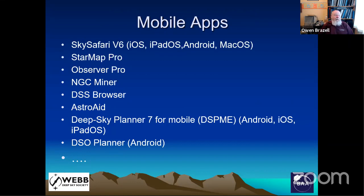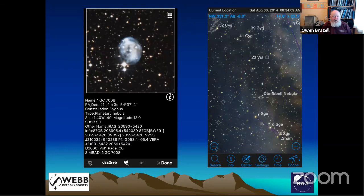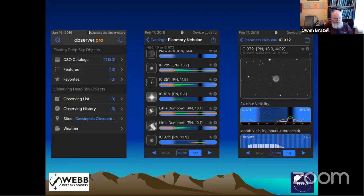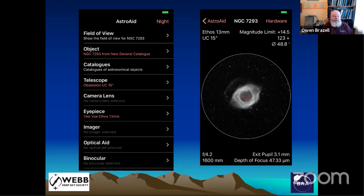More people are going to mobile apps now. Sky Safari is very popular, along with Star Map Pro, Observer Pro, and others. Most of these are iOS, though some are Android as well. This shows Observer Pro with the planetary nebula list — it shows rise and set times and a picture of the nebula. Asterism is quite useful: you put your telescope and eyepiece combination in and it will allow you to download a picture and show you what your eyepiece field might look like.